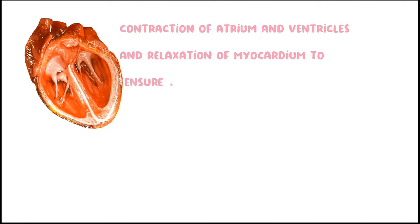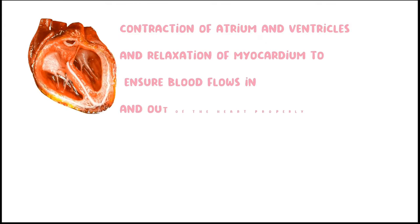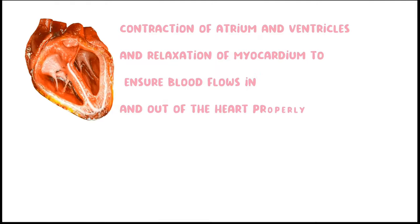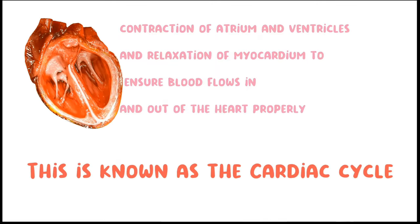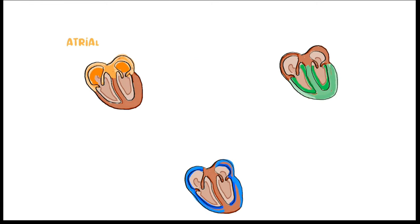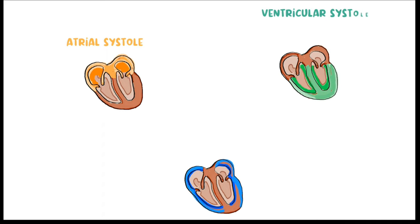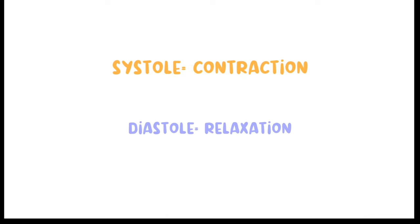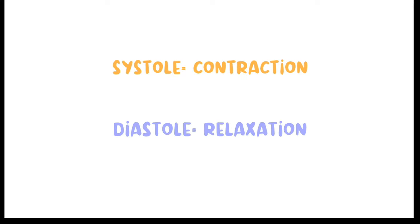This contraction and relaxation of the atrium and ventricles enables blood flow within the heart and out of the heart, and this process is known as the cardiac cycle. There are three steps of the cardiac cycle: the atrial systole, the ventricular systole, and complete cardiac diastole. Systole means contraction, while diastole means relaxation.